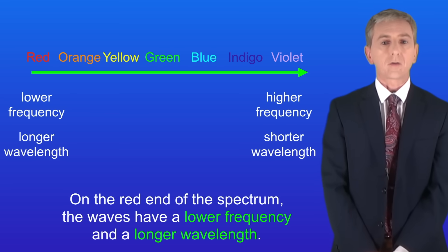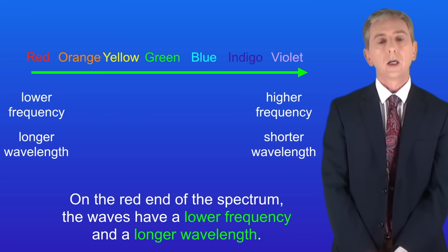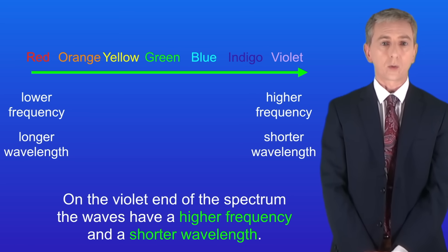On the red end of the spectrum the waves have a lower frequency and a longer wavelength. Whereas on the violet end of the spectrum the waves have a higher frequency and a shorter wavelength.